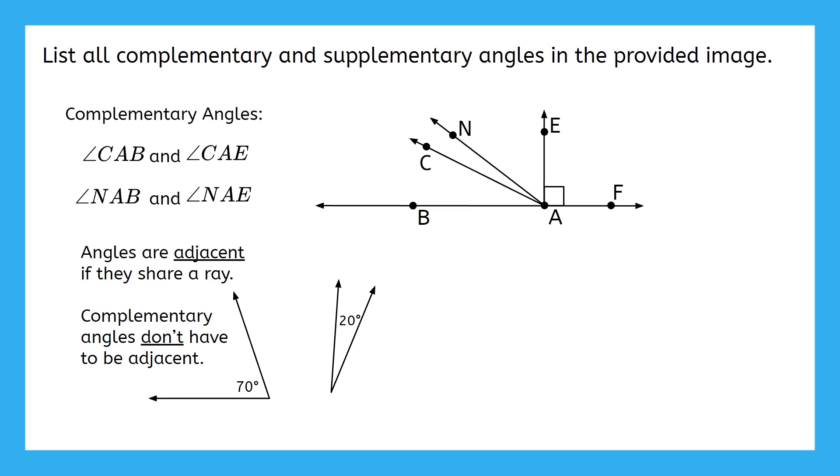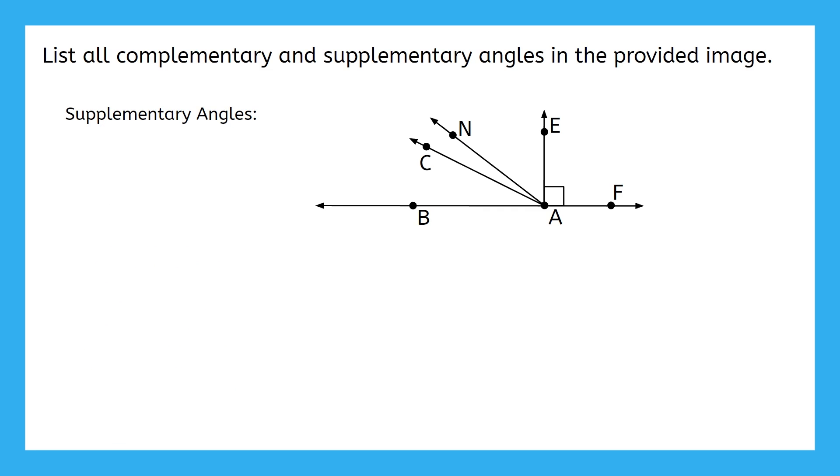Then get ready to check your answers for the SUPPLEMENTARY angles. Supplementary angles add up to 180 degrees. We have angles EAF and EAB. They add up to 180 degrees, since 90 plus 90 is 180. Angles NAF and NAB are also supplementary. And the same is true for angle CAF and angle CAB. Did you get these answers on your own? If not, pause the video now so you can catch up.